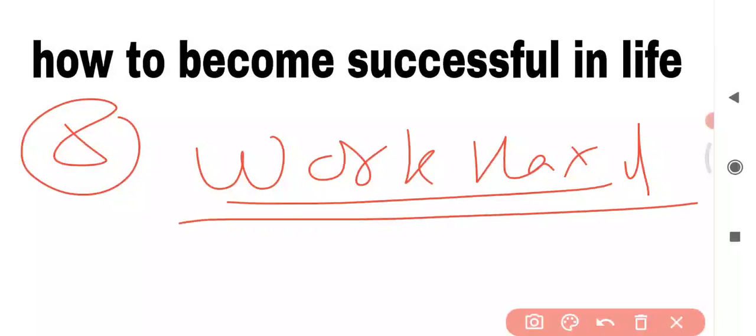So these were the five tips: make a timetable, get a mentor, improve your communication skills, set a goal and work hard. These are the five major ways by which you can become successful in your life.